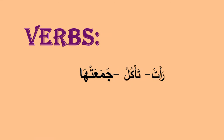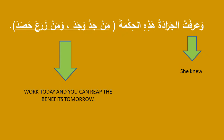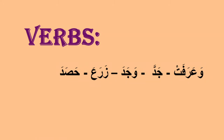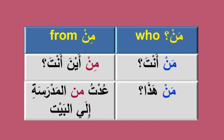وعرفت الجرادة هذه الحكمة — the grasshopper learned this wisdom. عرفت follows the same pattern: عرف ended with فتح, add تاء التأنيث with سكون = she knew. من جد وجد، ومن زرع حصد — who strives finds, and who plants harvests. Note: مَن (with fatha) means 'who', while مِن (with kasra) means 'from'. For example: من أنت — who are you? مِن أين أنت — where are you from? عدت من المدرسة إلى البيت — I returned from school to my house.